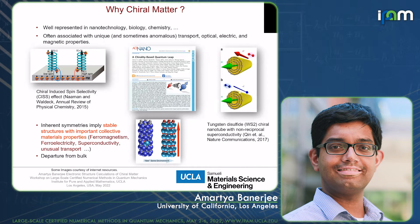Chiral matter is well represented across many branches of science and technology. Chiral materials are interesting because they are very often associated with collective properties — unique optical, electric, and magnetic properties. Sometimes, because these structures break certain kinds of symmetries, they can show anomalous properties.